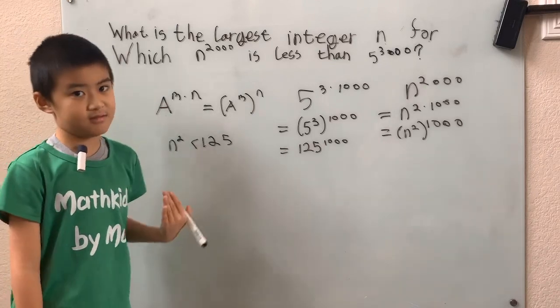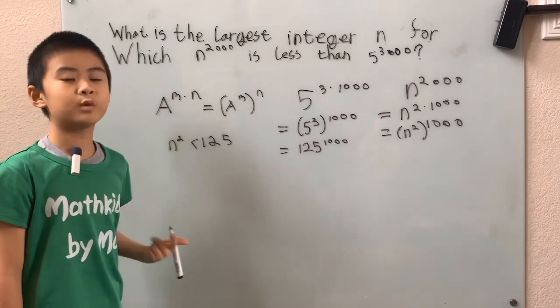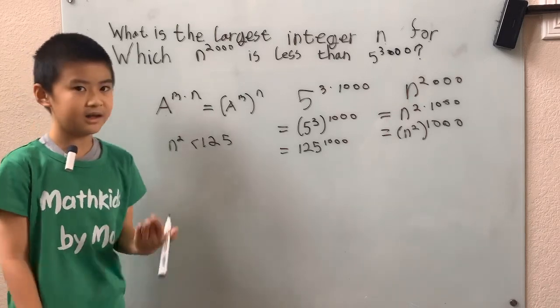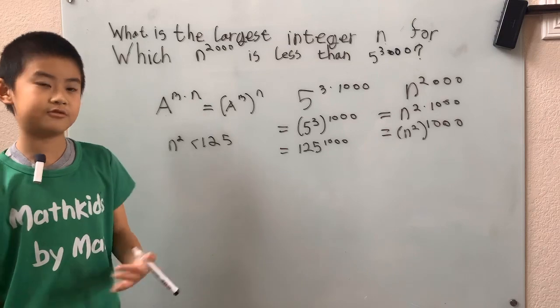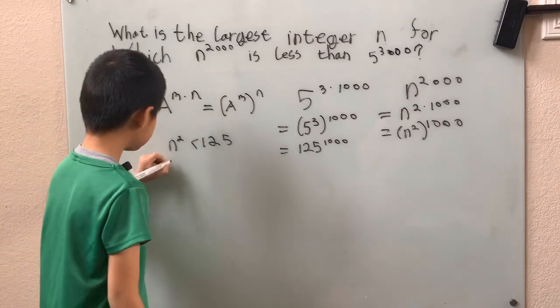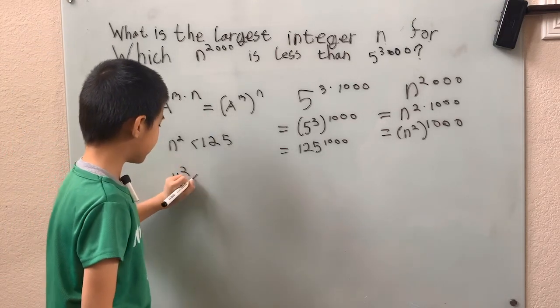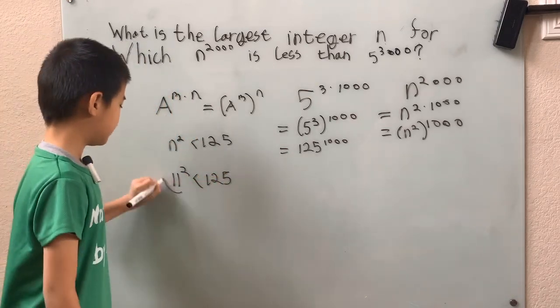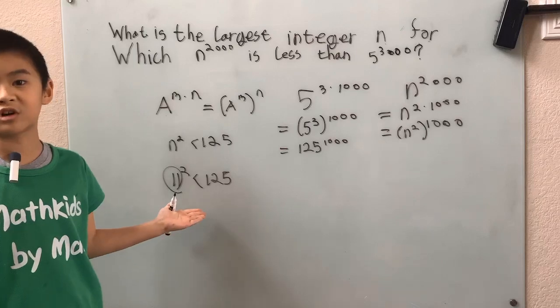And then we just test 10, 11, and 12. 10 squared is 100, 11 squared is 121, 12 squared is 144, but that's larger than 125, so 11. So we have 11 squared, that's the largest integer n, so that it's less than 125. And we circle 11, and we are done.